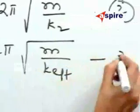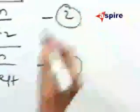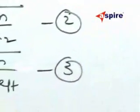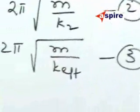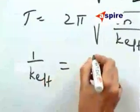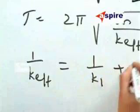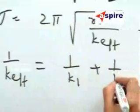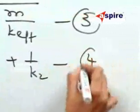When the springs are joined in series, the effective spring constant is K_effective. When the springs are joined in series, 1/K_effective = 1/K1 + 1/K2.